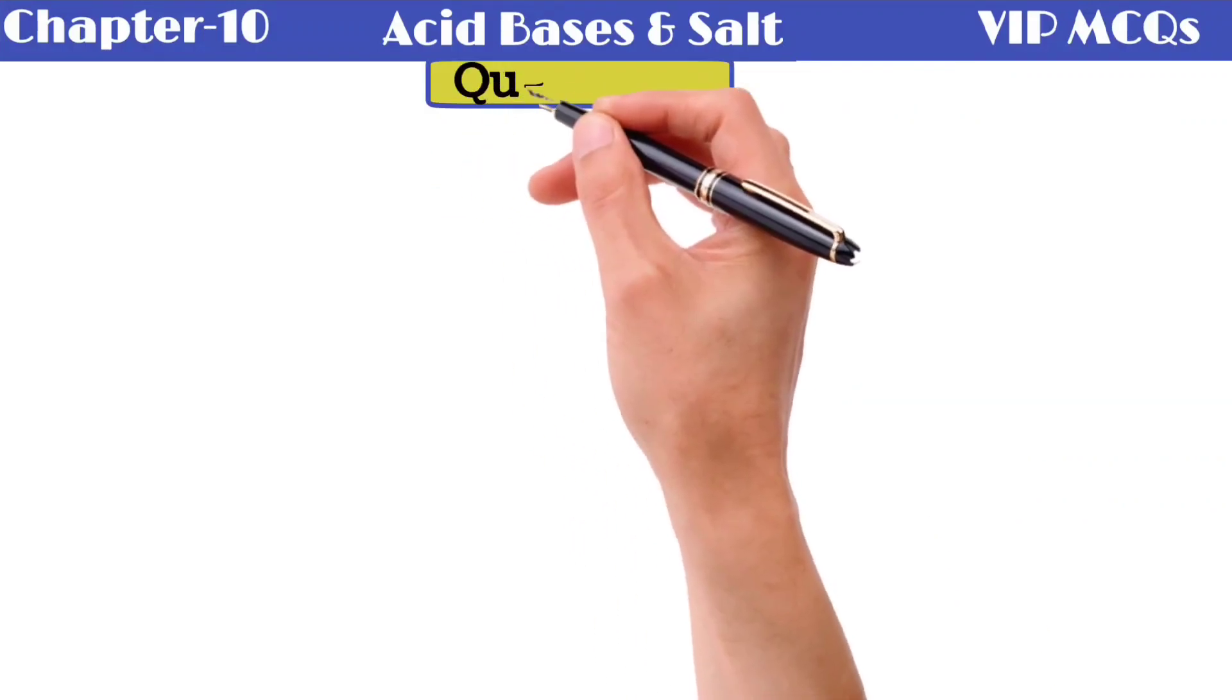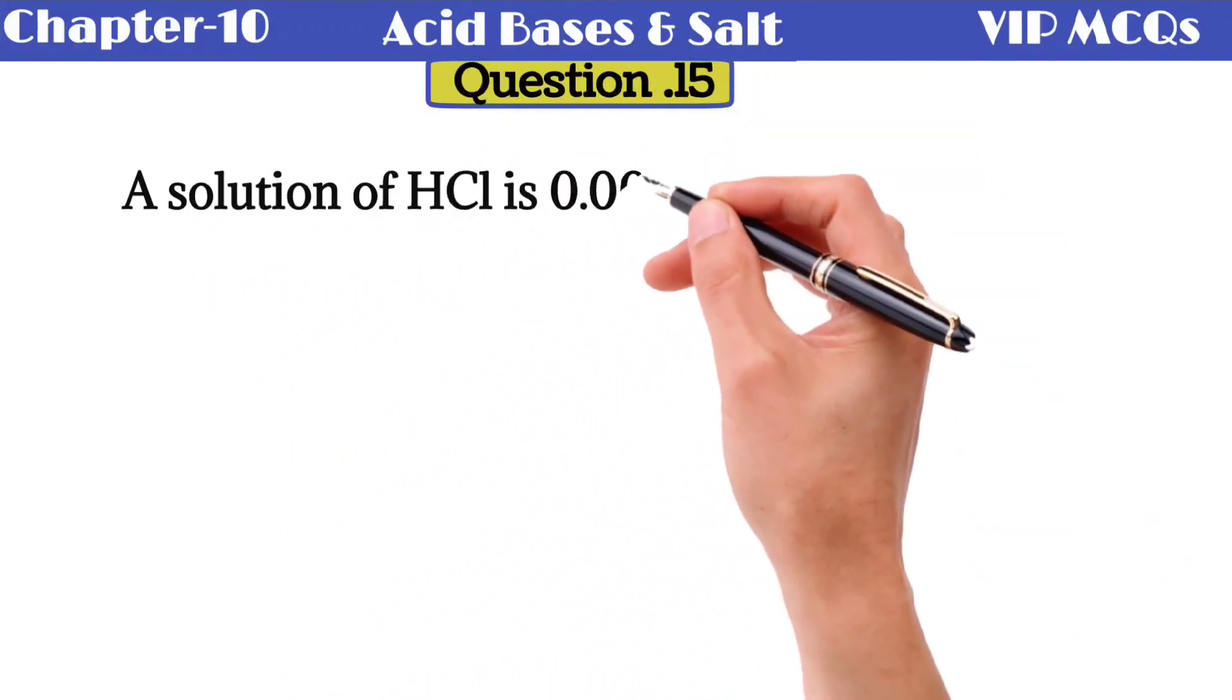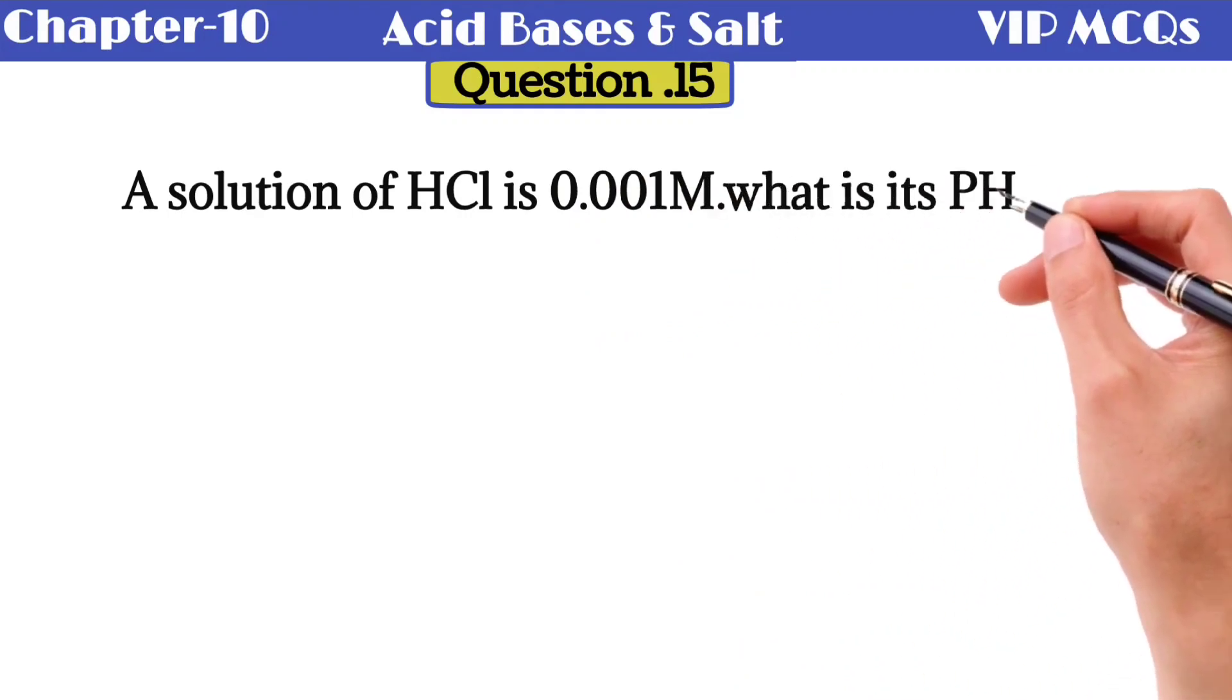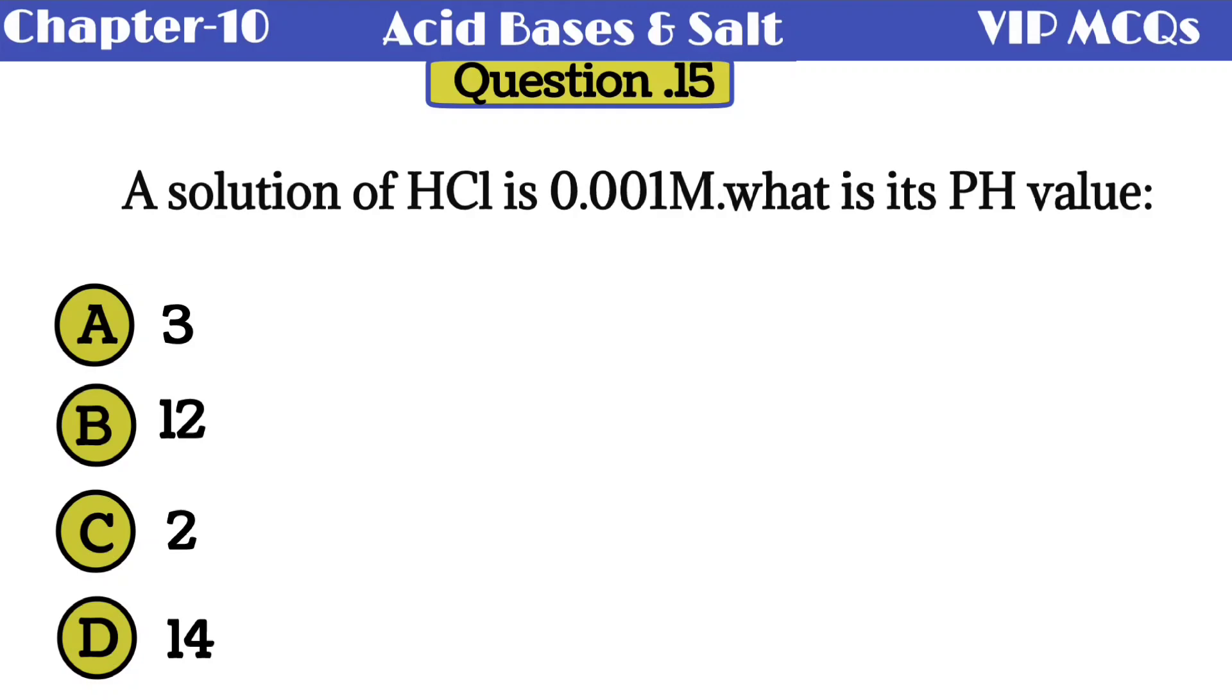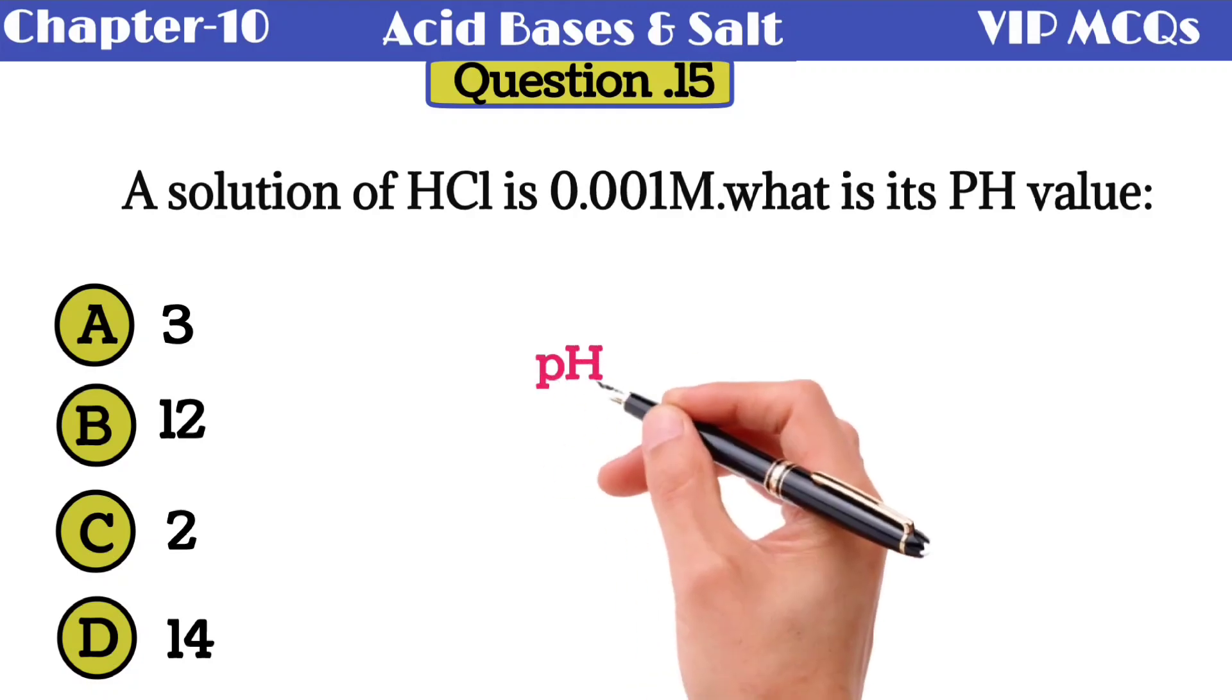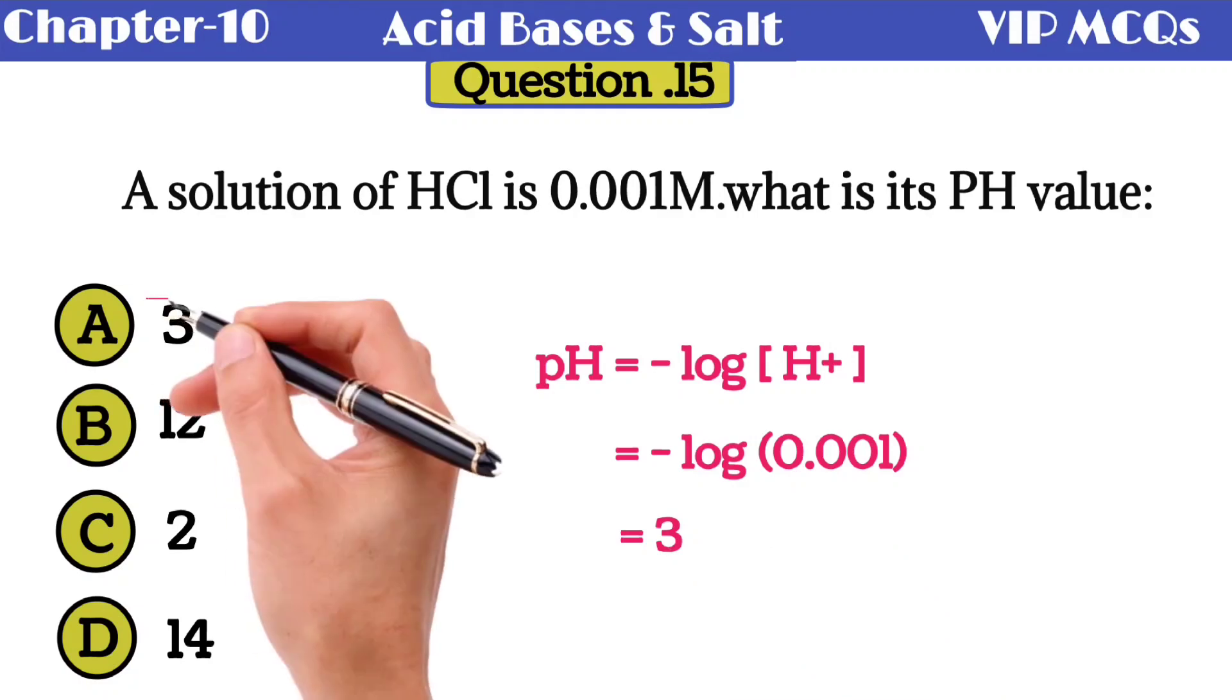Question number 15: a solution of HCl is 0.001 molar. What is its pH value? 3, 12, 2, or 14? My dear students, how can you find out the value of pH? pH is the negative logarithm of hydrogen ion concentration. The given hydrogen ion concentration is 0.001 molar. So if you take a negative log of 0.001, then the answer is 3. So the pH of given solution is 3.